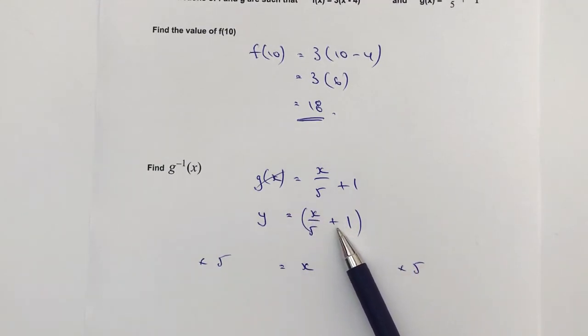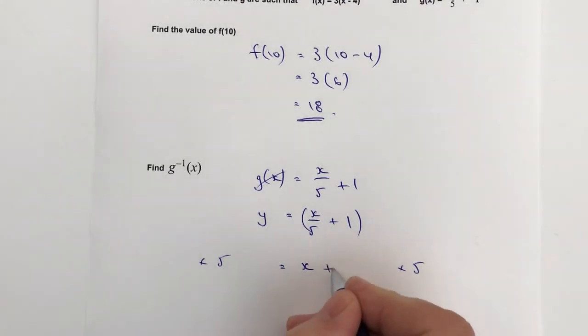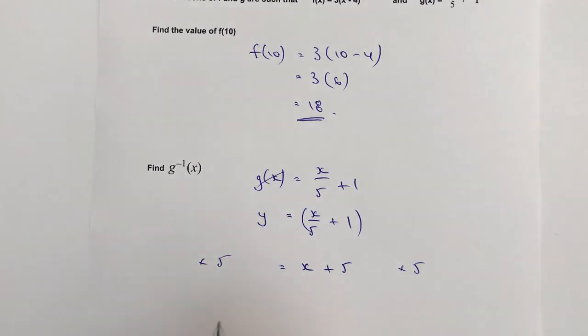On the left hand side I'm going to get 5y. Now remember what I said before is I need to be able to get x on its own, so I've got this plus 5. I'm going to get that plus 5 over to the left hand side by simply minusing 5.